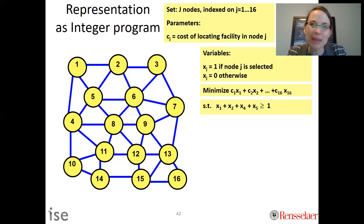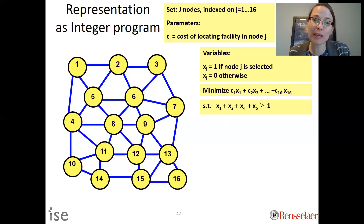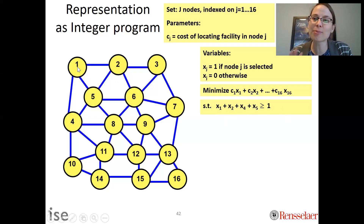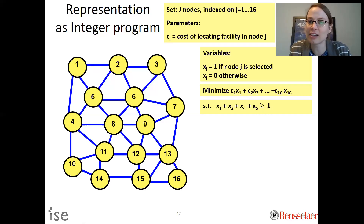Think about what that means in the context of our fire station problem. If you've taken an operations research course, you may remember that for binary variables, these plus signs can be thought of as 'or.' We need to build in location 1, or location 2, or location 4, or location 5. That means we need to cover neighborhood 1 — at least one of those locations must have a fire station, otherwise neighborhood 1 is not covered.